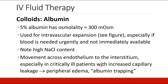5% albumin is a very common colloid. It has an osmolarity of about 300 milliosmol, which is physiologic. You will see people using it for intravascular expansion, especially if blood is needed urgently and not immediately available. Note that albumin has a high sodium chloride content, and you can cause hypernatremia if you use a lot. Albumin will move across the endothelium into the interstitium, especially in critically ill patients with increased capillary leakage, causing peripheral edema as the albumin becomes trapped in the interstitium and pulls fluid out of the vasculature.